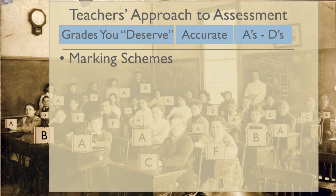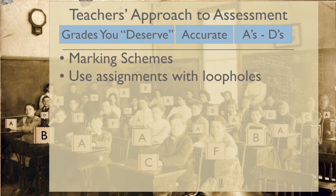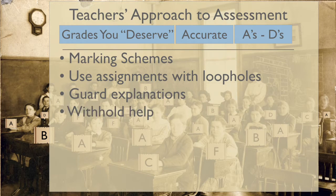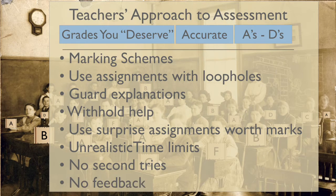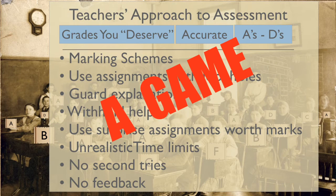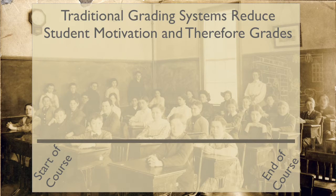Teachers start with marking schemes — rubrics they know really well — broad enough to ensure students get the grades they deserve. They use assignments with loopholes: spots students will overlook, or things briefly mentioned in class that most weren't listening to. They guard their explanations, withhold help, use surprise assignments worth marks, unrealistic time limits, no second tries, and no feedback. All of this boils down to a game for students. Even though they put in hours on assignments, they always seem to get the same grade because the teacher is better at the system than they are. Traditional grading systems reduce student motivation and therefore reduce grades.